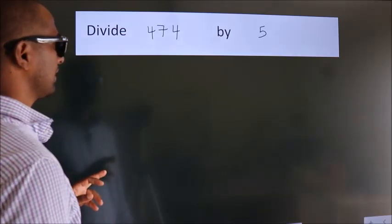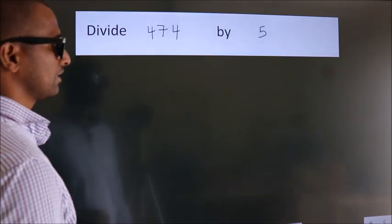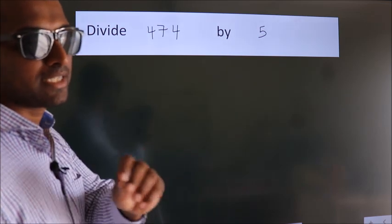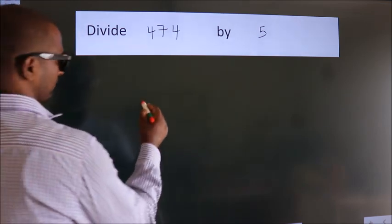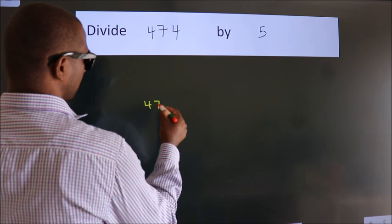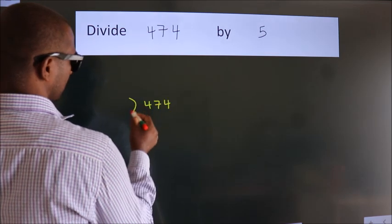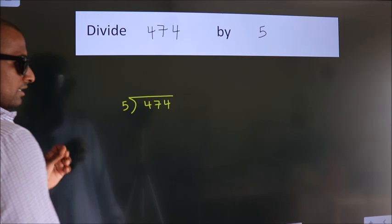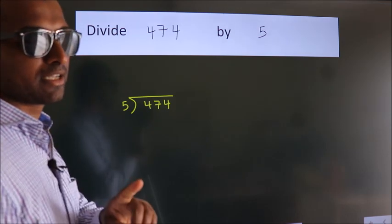Divide 474 by 5. To do this division we should frame it in this way. 474 here, 5 here. This is your step 1. Next.